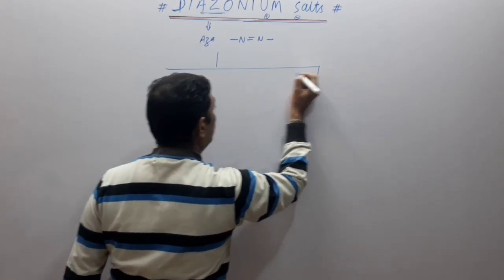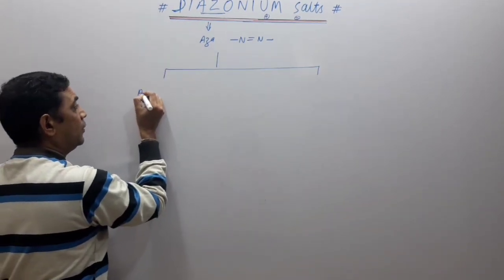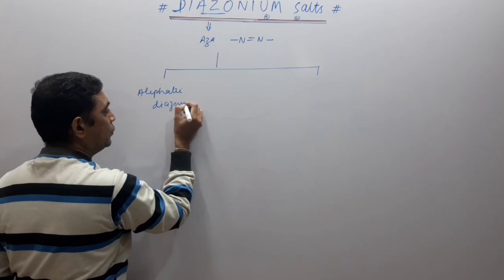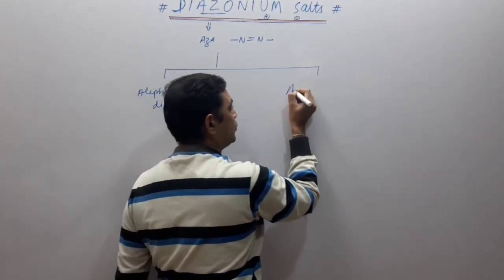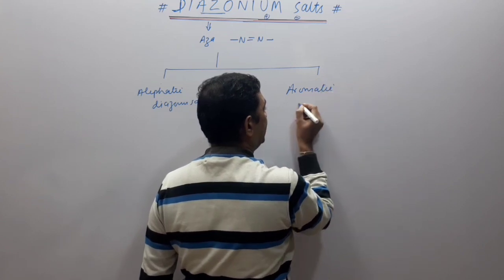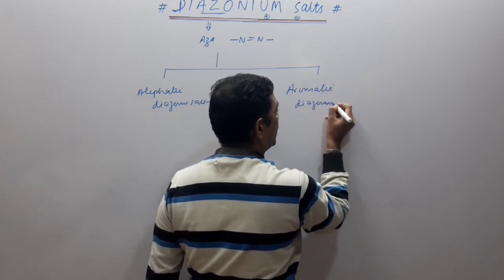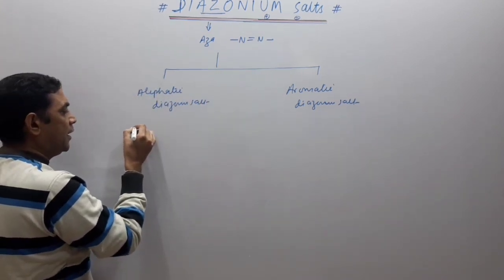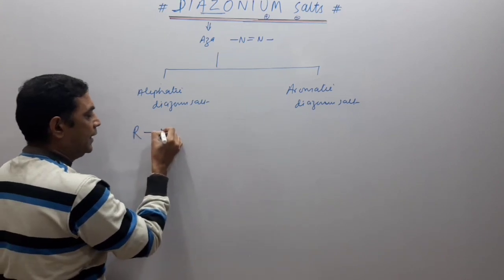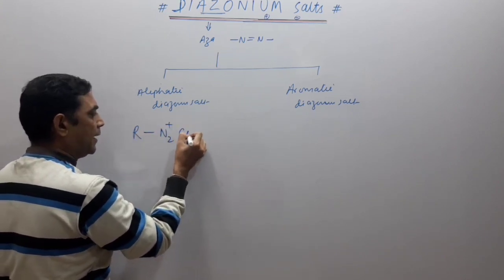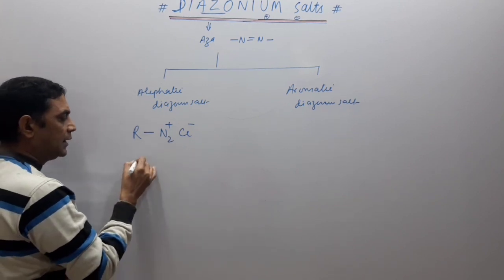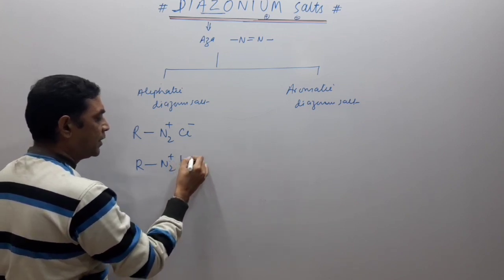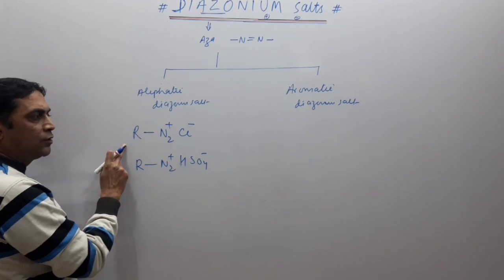The diazo functional group has two major categories: one is aliphatic diazonium salt and the second one is aromatic diazonium salt. Aliphatic diazonium salt has the form R-N2⁺Cl⁻ (diazonium chloride) or with sulfate HSO4⁻.